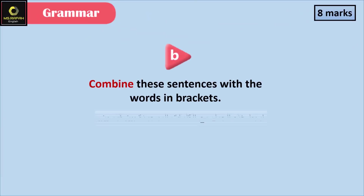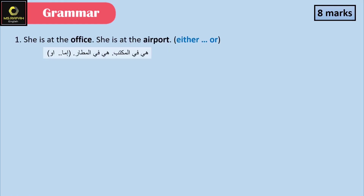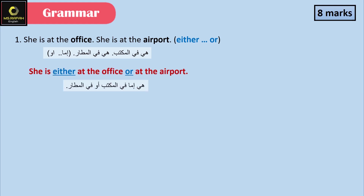Question B. Combine these sentences with the words in brackets. 'She's at the office. She's at the airport.' We're going to use either/or. Answer: She's either at the office or at the airport.